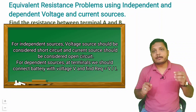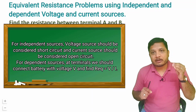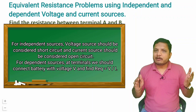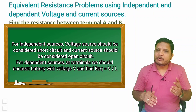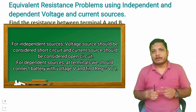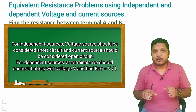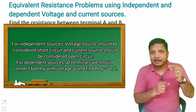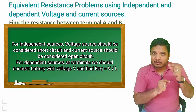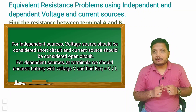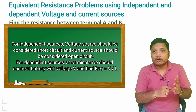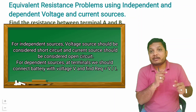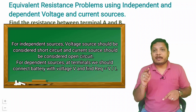consider voltage sources as short circuited and current sources as open circuited, then you can redraw the circuit and find equivalent resistance. But when it comes to a dependent source, all you need to do is connect a battery at the terminal where you are asked to measure resistance, and then find the resistance as voltage of that battery divided by the current generated by that battery. That gives you the equivalent resistance.